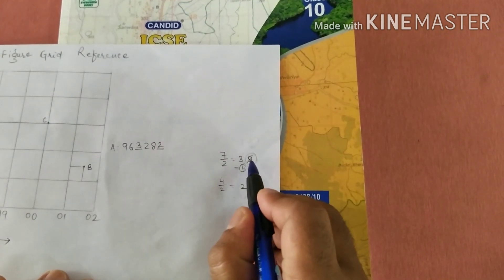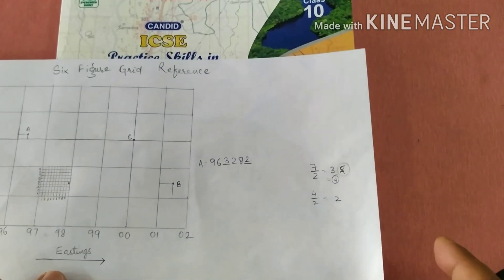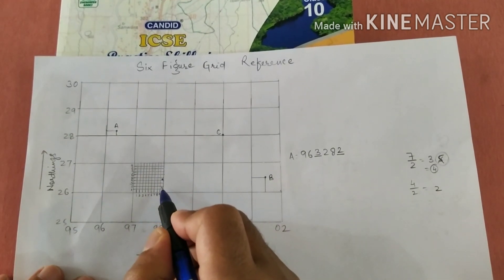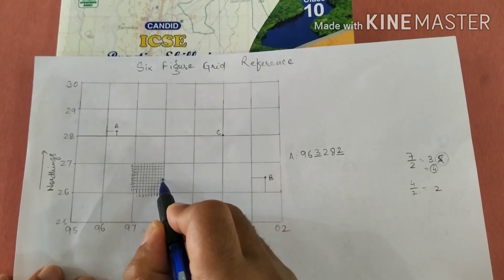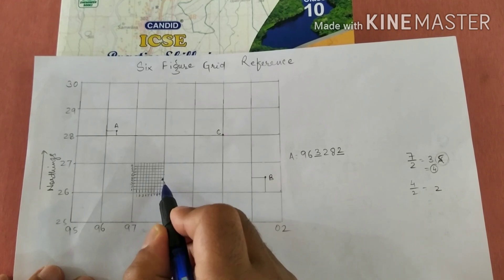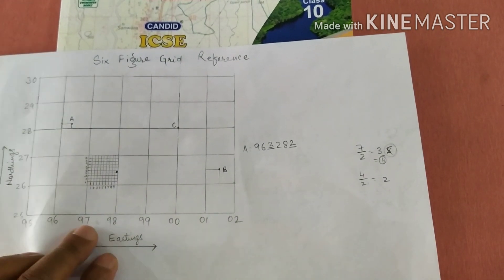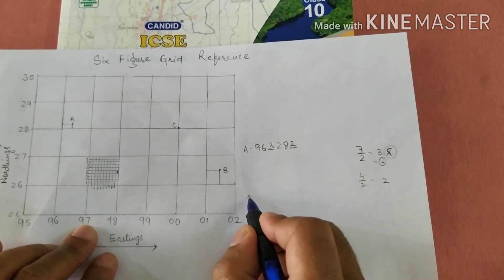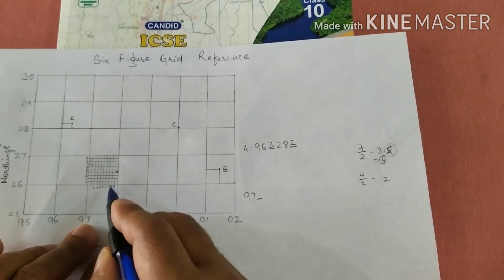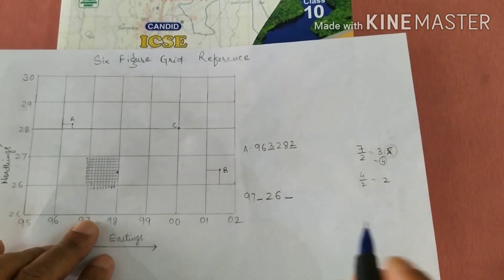Now I was telling you about why I should not round off. Let's come to this question. Suppose the location of an object is just close to, and in between, lines 19 and 20. The four-figure grid reference of this will be 97 space and 26 space.